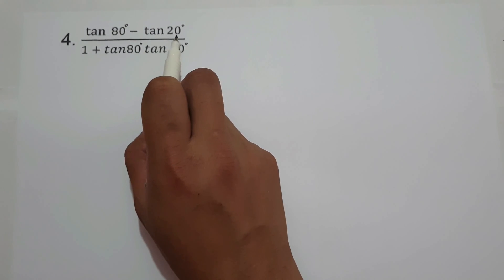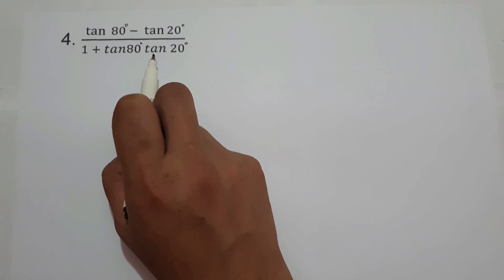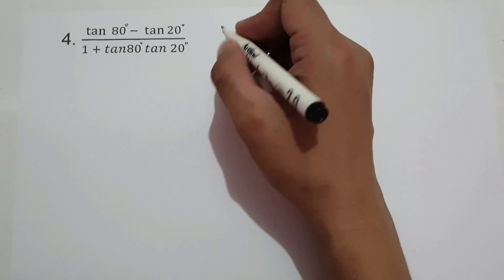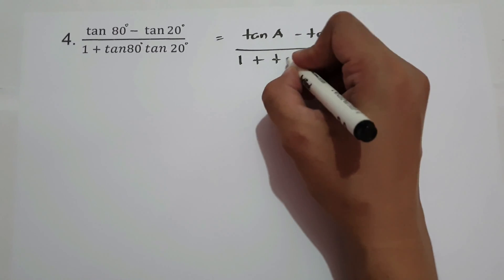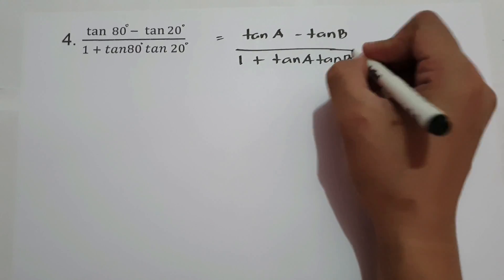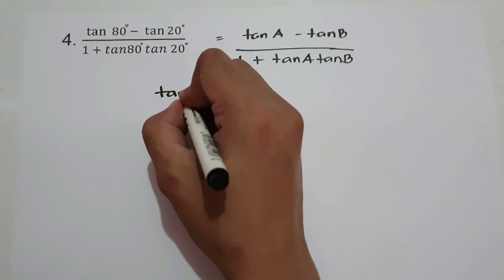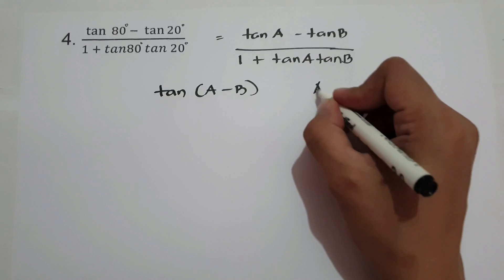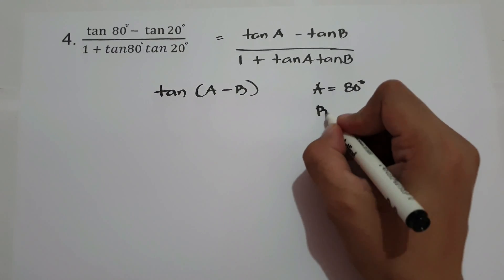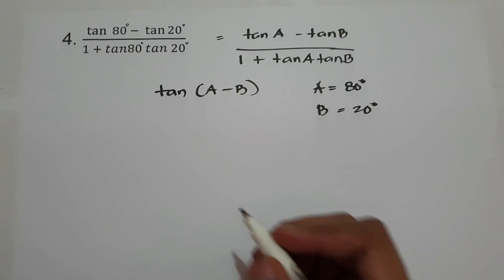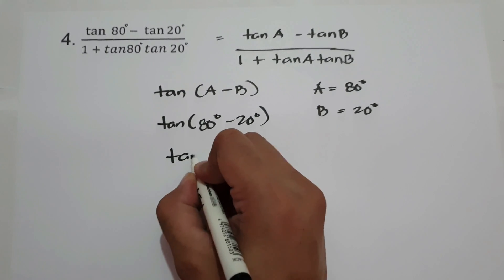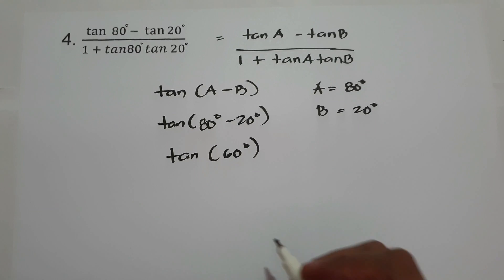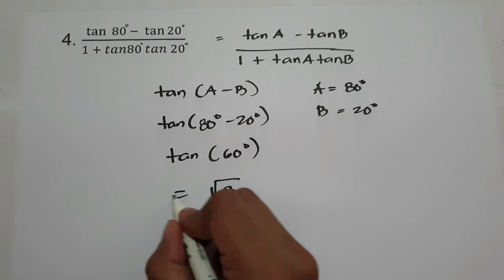On our last example, we have (tan 80° - tan 20°) / (1 + tan 80° · tan 20°). This is written in the form of tangent(A-B). With A = 80° and B = 20°, this equals tangent(80° - 20°) = tangent 60° = √3. This is our answer.